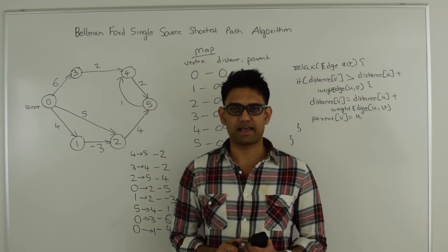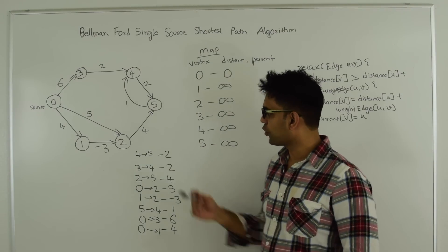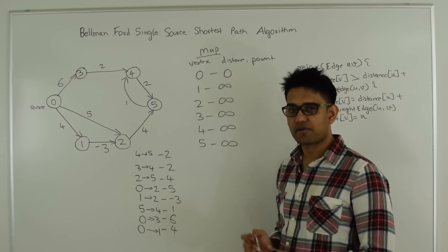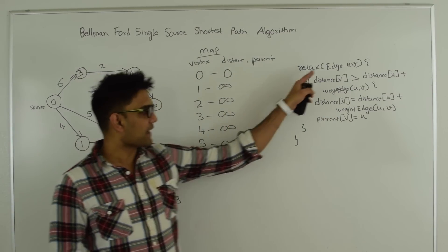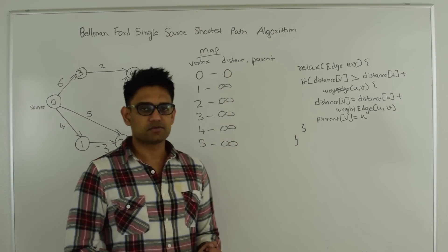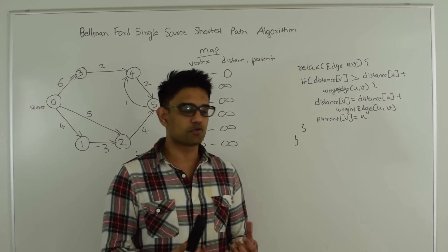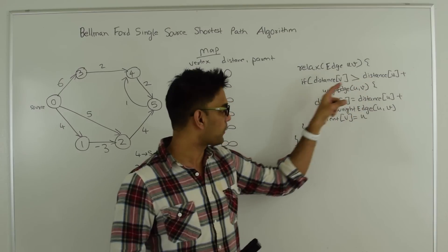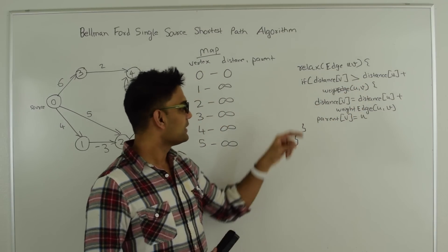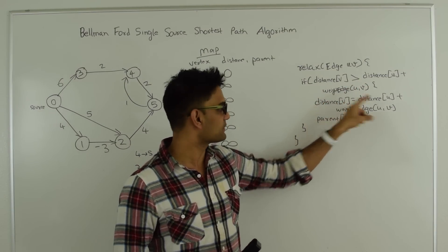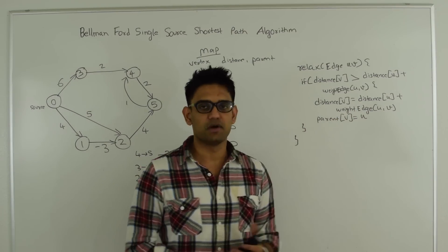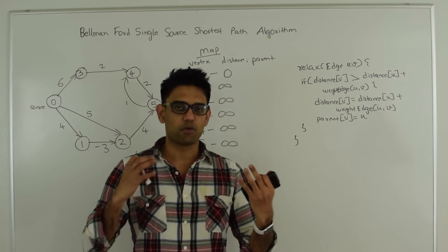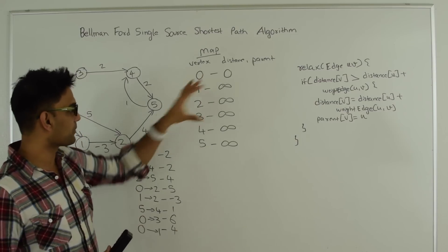Next let's see how Bellman-Ford works. The idea is to go through all the edges of the graph one by one in some random order — here I have one such random order, it can be any random order — and then apply this relaxation formula on edge uv. For a given edge uv going from u to v, if the distance to reach v from the source vertex is greater than the distance to reach u plus the weight of edge uv, then you set the distance of v to be distance of u plus the weight of edge uv, and the parent of v to be u. This means you found a shorter path to reach v via u, and we store all this information in a map.